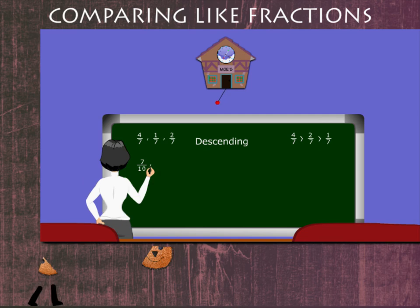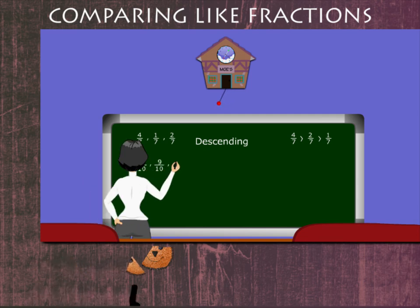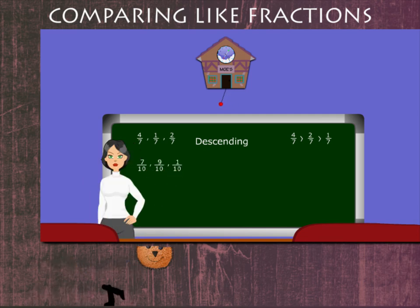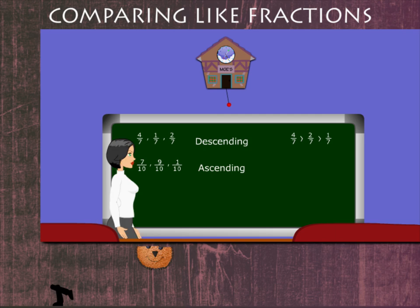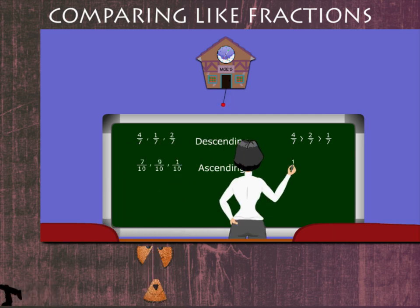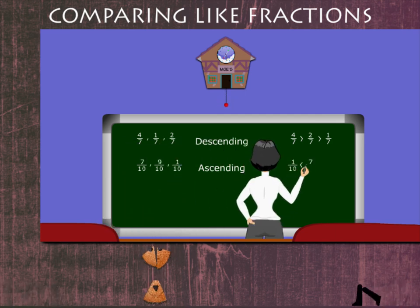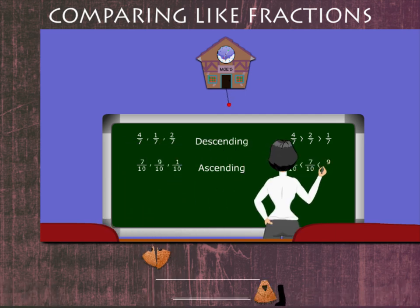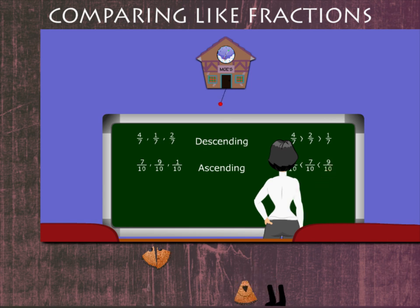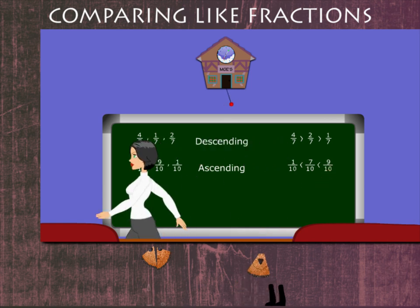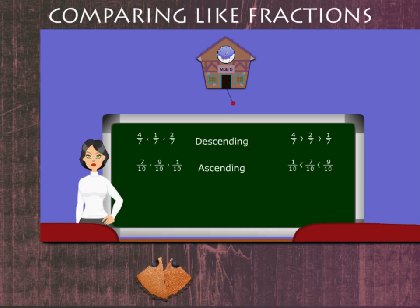She writes 7/10, 9/10, and 1/10 and arranges them in ascending order. 1/10 is less than 7/10, which is less than 9/10.